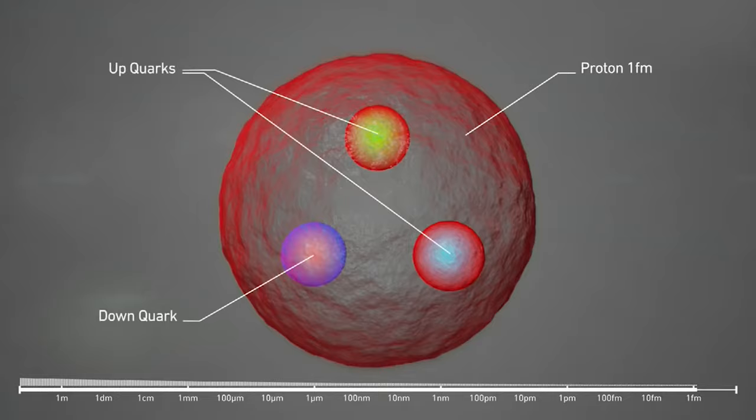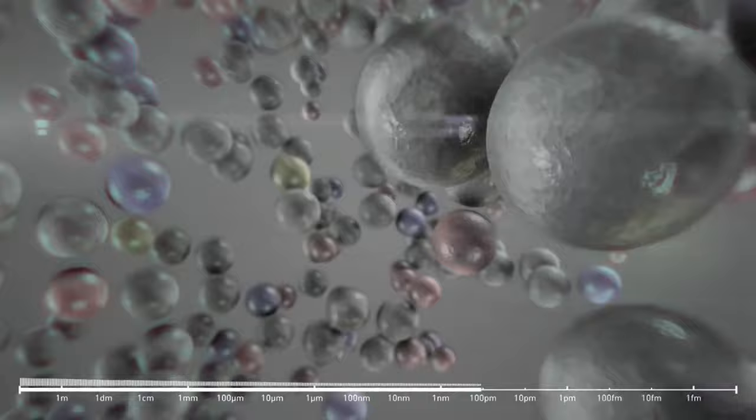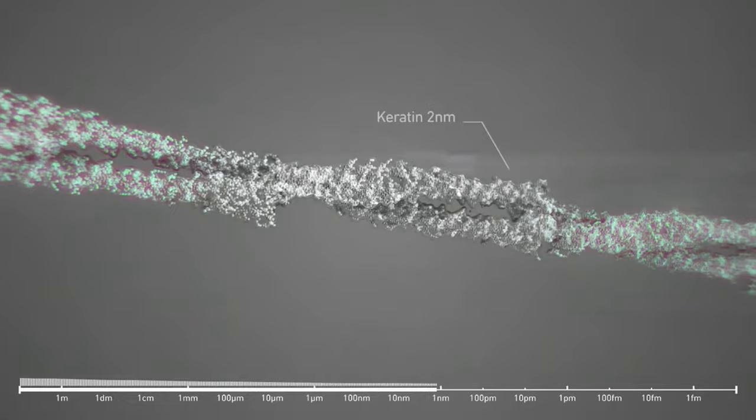Atoms interact with each other to form molecules, cells interact with each other to form plants and animals, and human beings interact with each other to form societies. The interactions between components generate totalities with new powers, where power refers to something like potential or capacity — capacity to affect and be affected by things in the world.